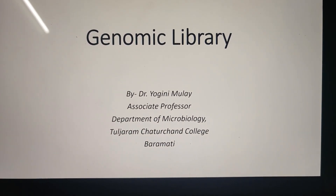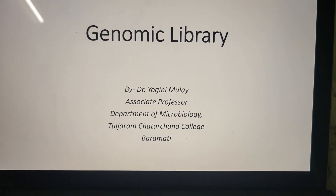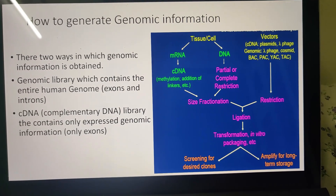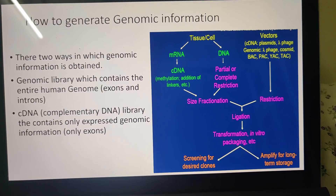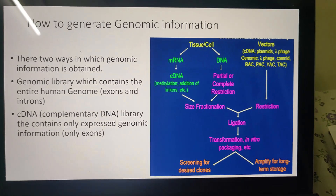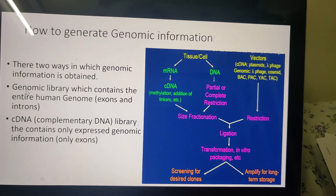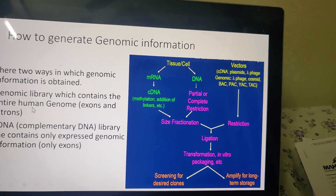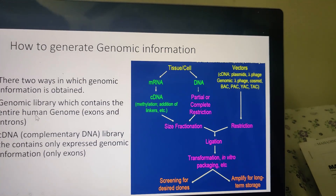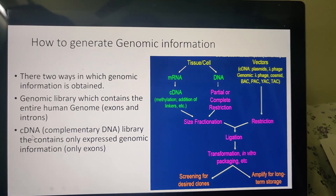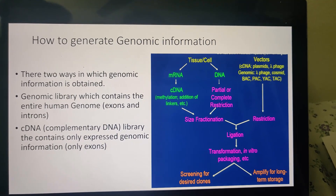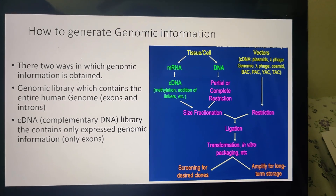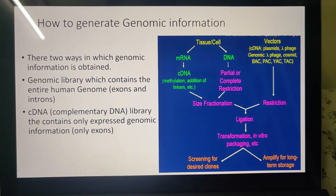Hello everyone, today I am going to talk on genomic library. Many times it is necessary to generate genomic information. There are two ways by which genomic information can be generated. Number one, we can create the genomic library which contains the entire genome sequence from any species. The second way is the cDNA library — complementary DNA library — which contains only the expressed genomic information, that is, it contains only exons.